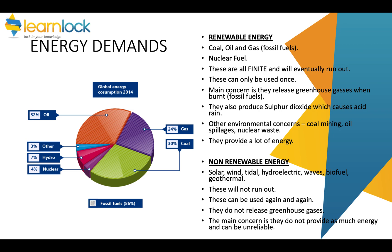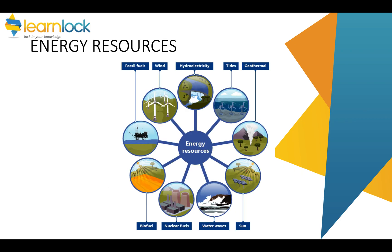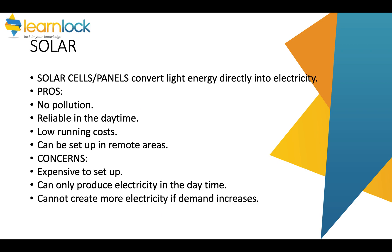The pie chart here shows the consumption in 2014 of different types of energy. We're going to be looking at the renewable energy resources first of all. Solar — so solar cells or panels — actually convert light directly into electricity.